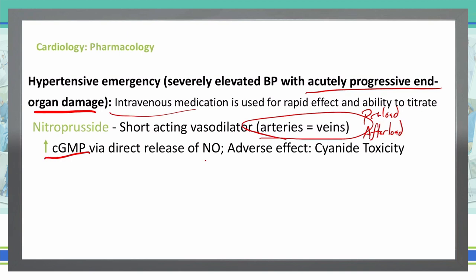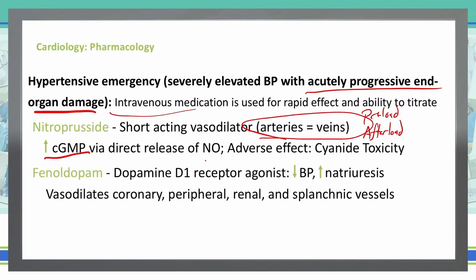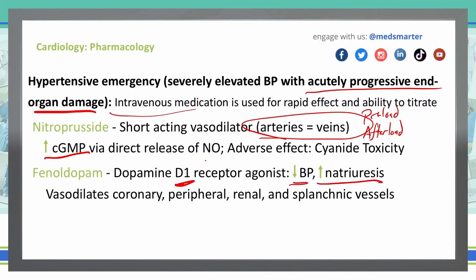Our other medication for use in a hypertensive emergency is fenoldopam. This is a dopamine D1 receptor agonist — it works to decrease blood pressure and increase natriuresis. We see vasodilation of the coronary, peripheral, renal, and splanchnic vessels.